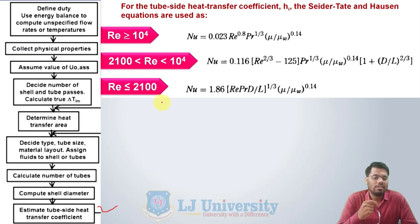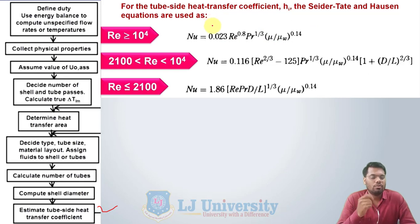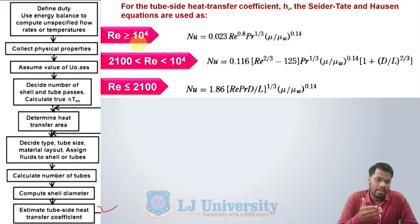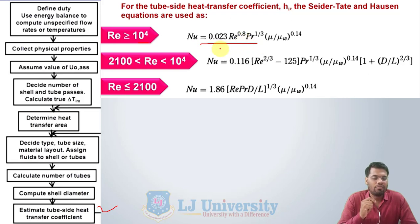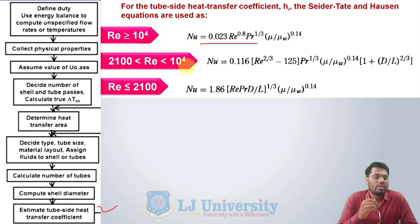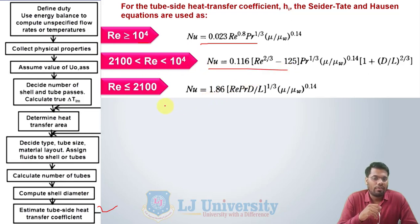To estimate the tube side heat transfer coefficient, there are equations — the Sieder-Tate and Hussain equations — which we can use, based on the value of the Reynolds number. If Reynolds number is greater than or equal to 10 raise to 4, the relation between Nusselt, Reynolds, and Prandtl is given. If the fluid is in a transition zone, where Reynolds is between 2100 to 10 raise to 4, then we can use a different equation. And if the value of Reynolds number is less than 2100, it means it is laminar, and we use the corresponding relation.